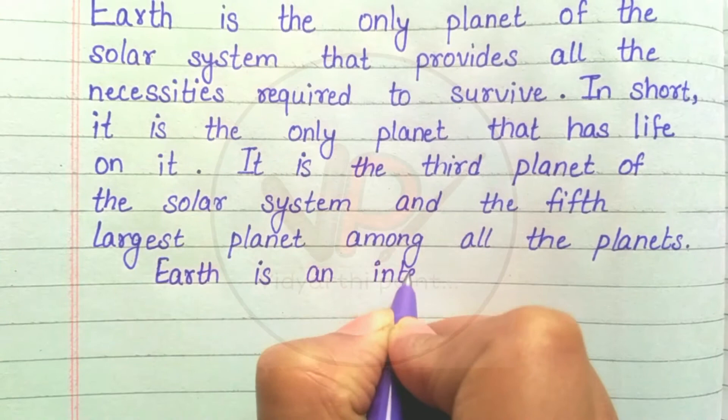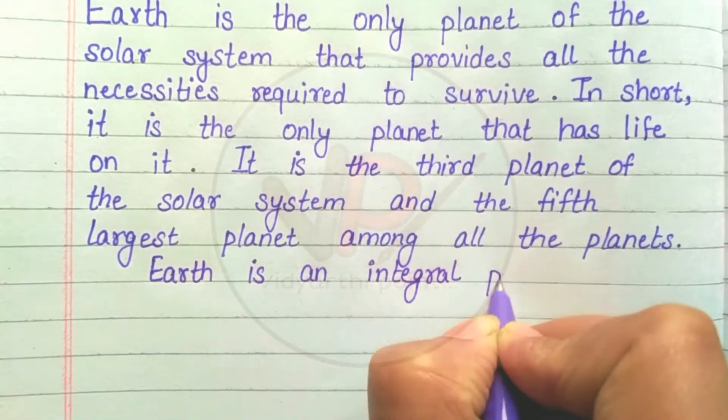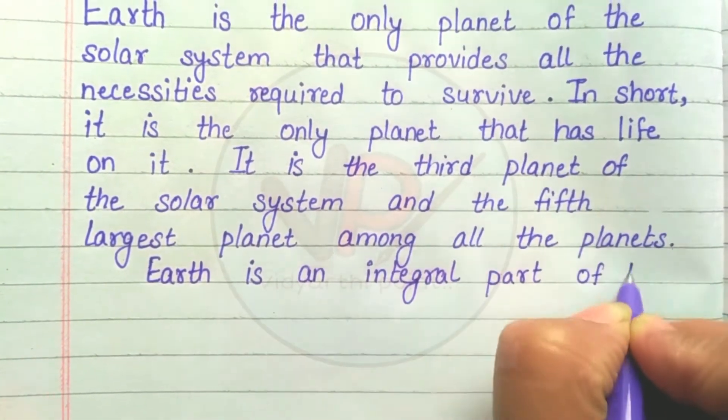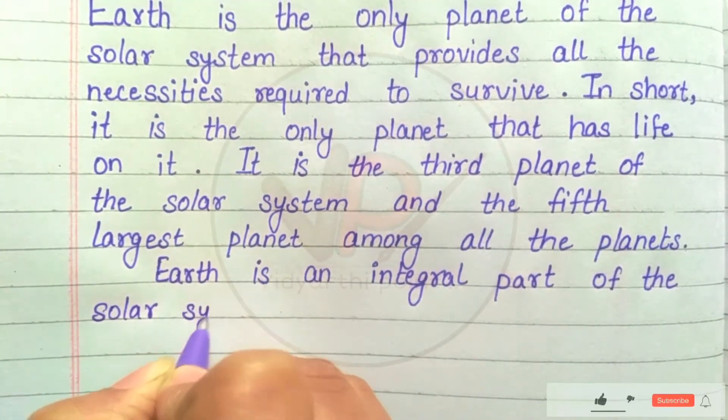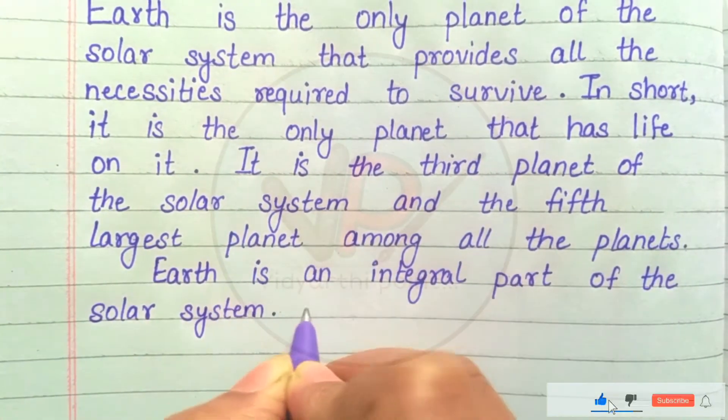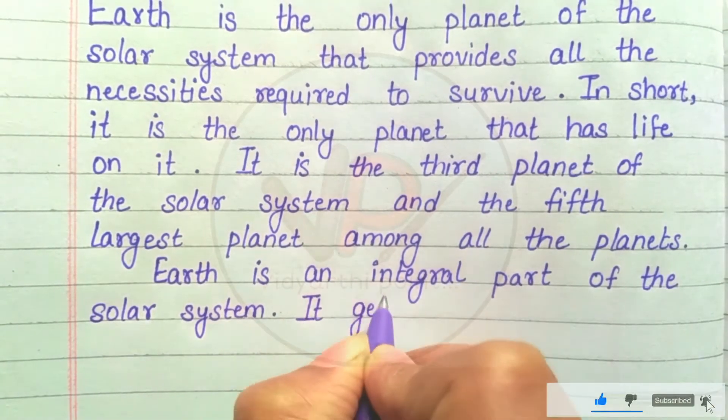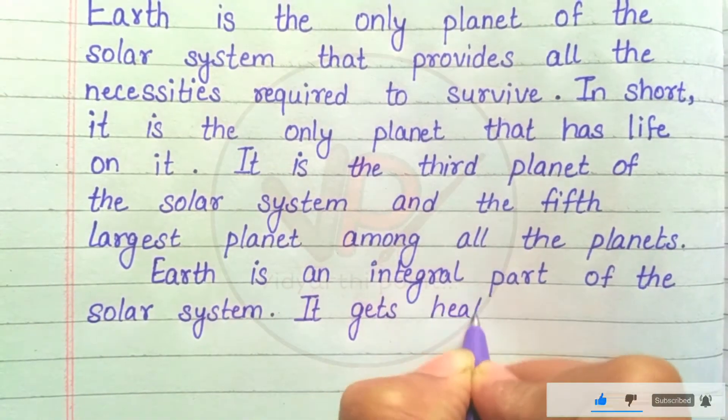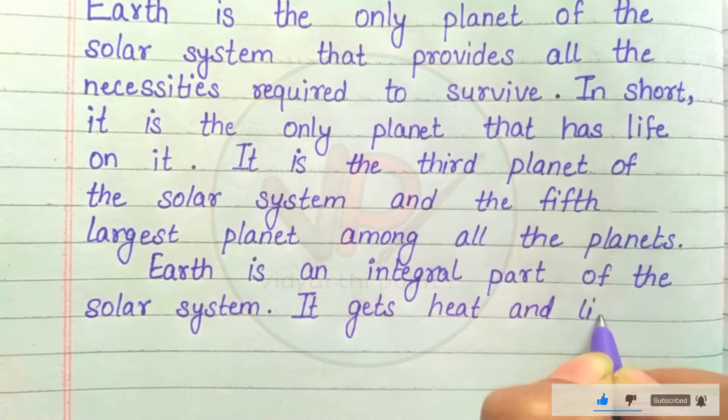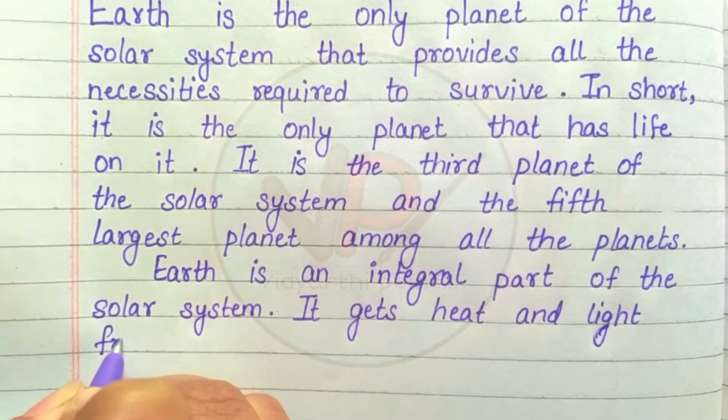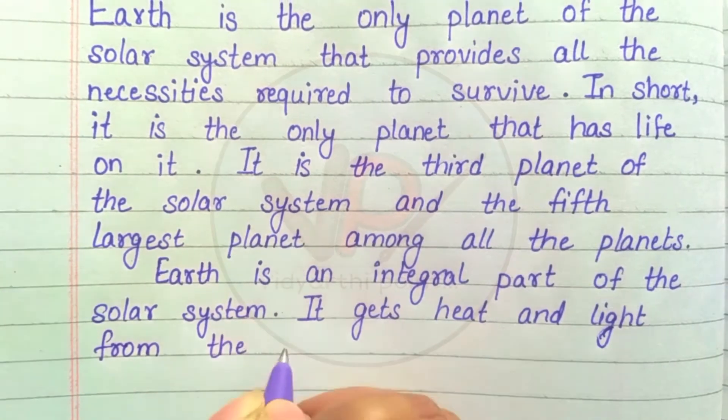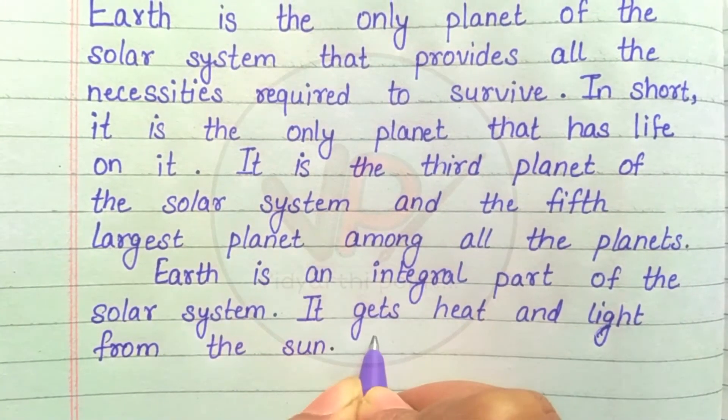Earth is an integral part of the solar system. It gets heat and light from the sun.